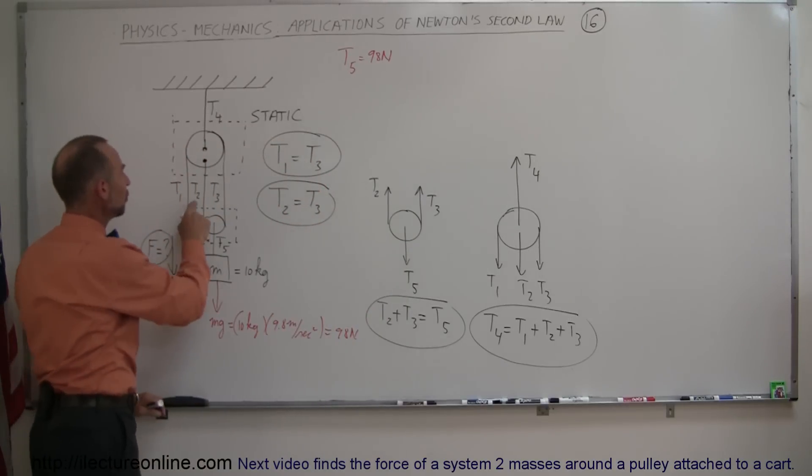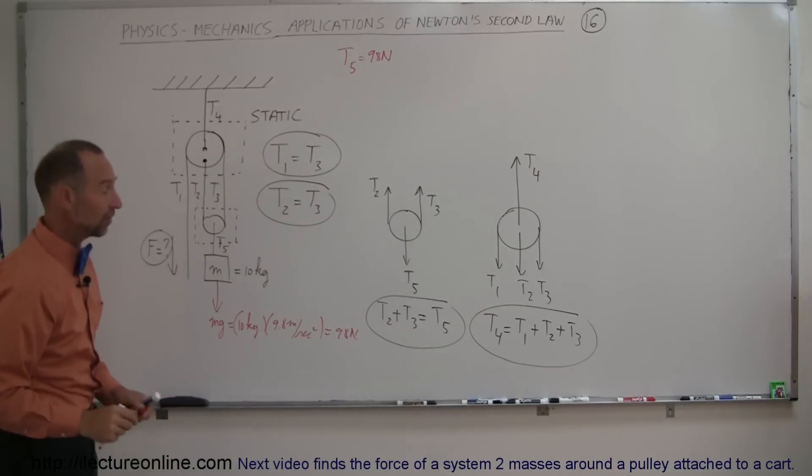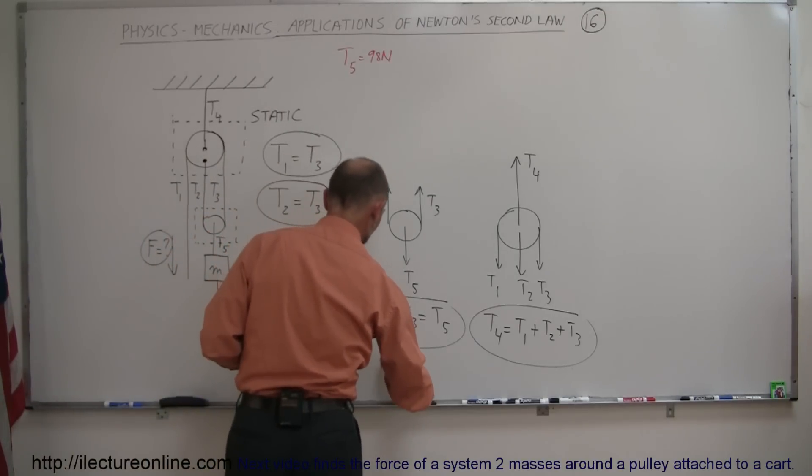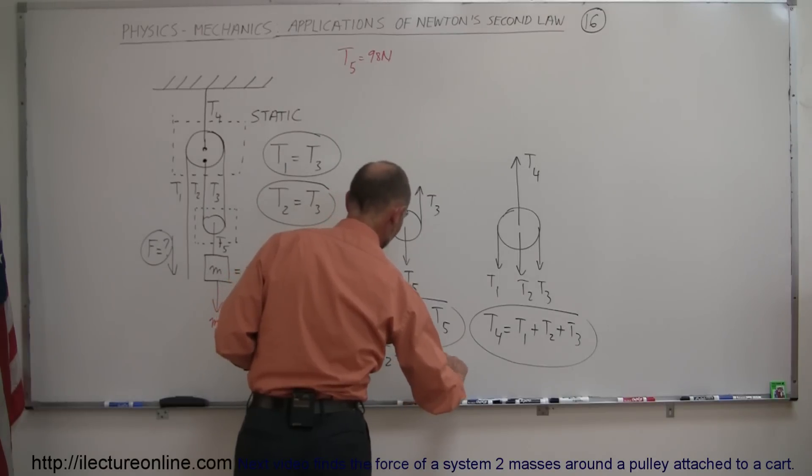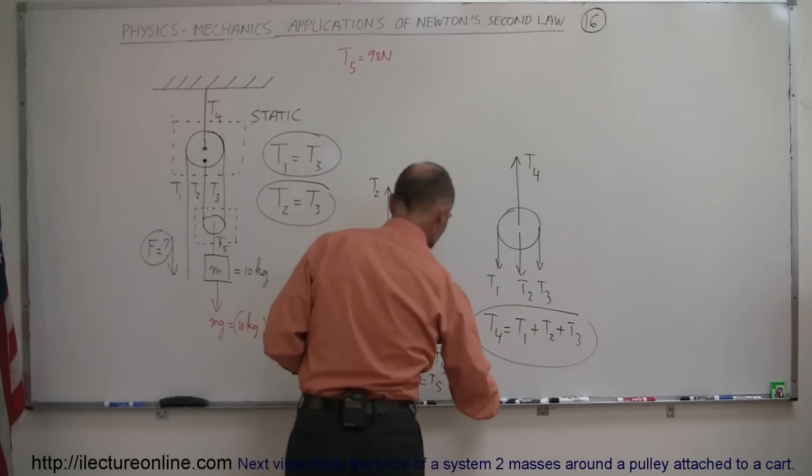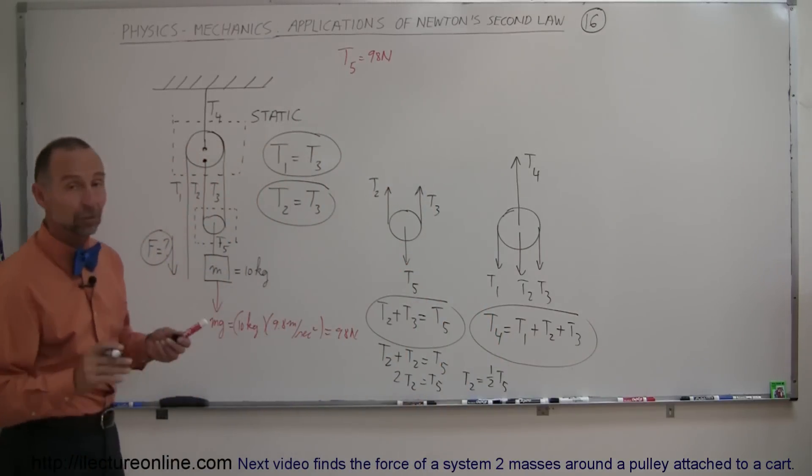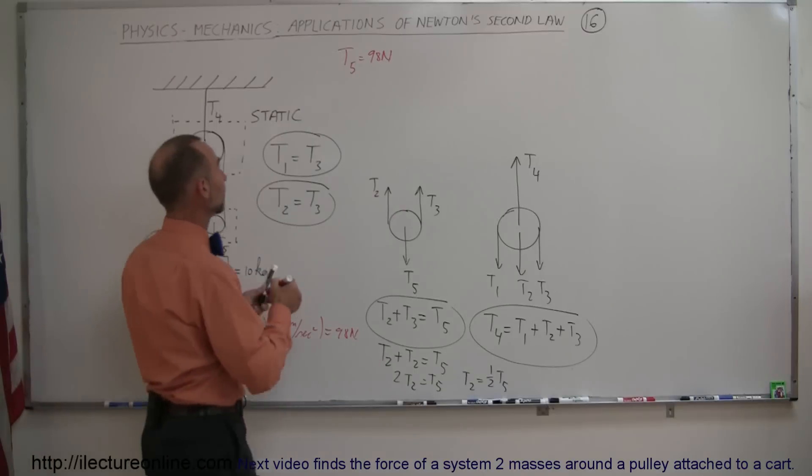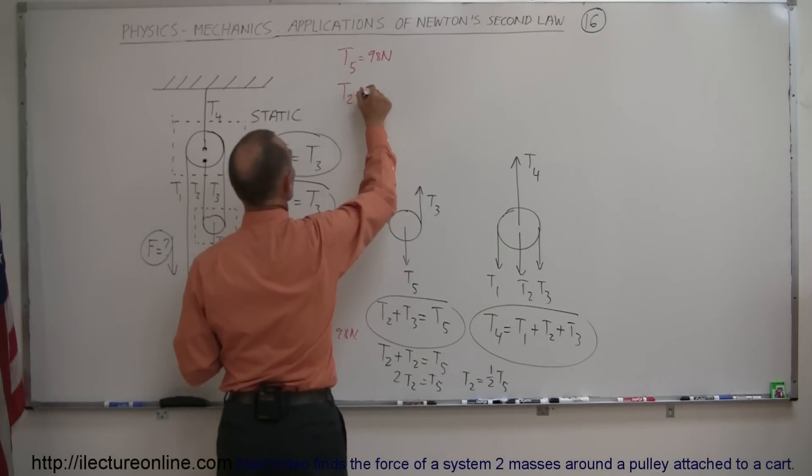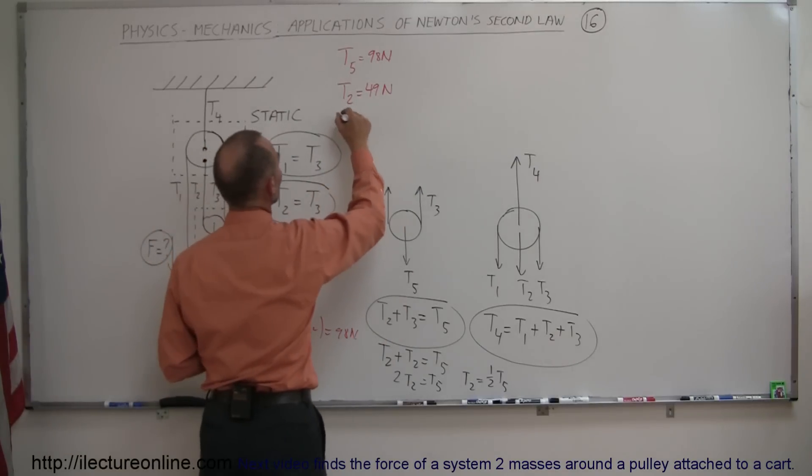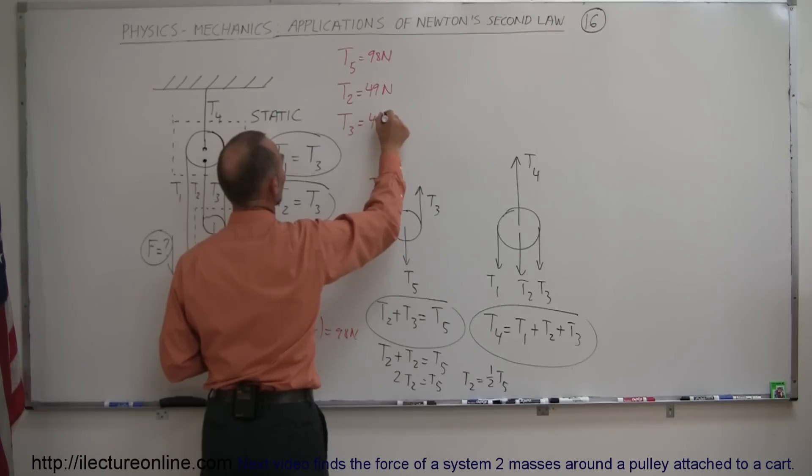Now we know that T2 and T3 must be equal, and we know that the sum of those two must equal T5, which means that we can replace T2 by T3. So we can have T2 plus T2 is equal to T5, which means that 2T2 is equal to T5, or T2 is equal to one half of T5. So since T5 is 98 newtons, T2 is half of that, which is 49 newtons, and since T2 and T3 are equal, we can say that T3 must therefore also equal 49 newtons.